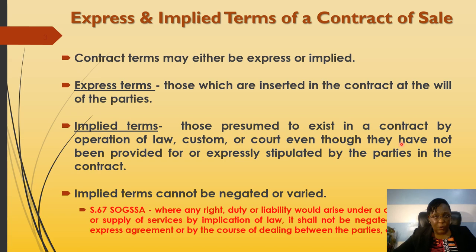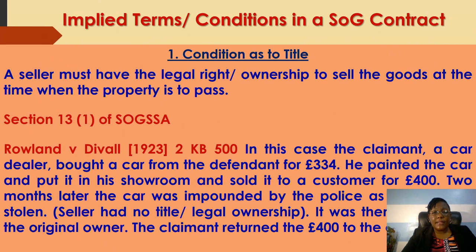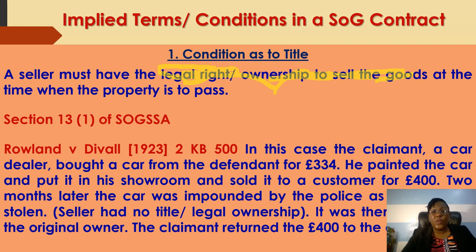A condition is a major term of a contract. If you fail to fulfill these express and implied terms, it permits the other party to cancel or repudiate the contract. The first implied condition we will discuss is the condition as to title. Here we are saying that you must have the legal right of ownership — you must have the legal right to sell what you're selling. You cannot sell something that is stolen.